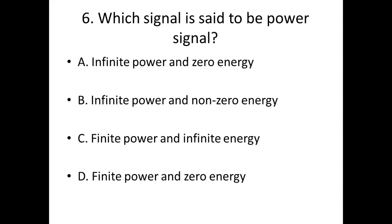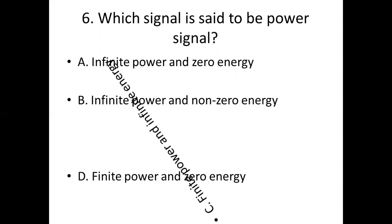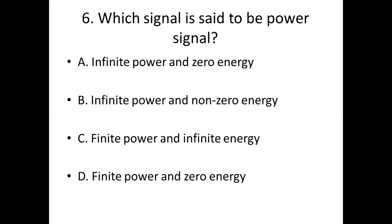Question 6: Which signal is said to be a power signal? Option A: infinite power and zero energy. Option B: infinite power and non-zero energy. Option C: finite power and infinite energy. Option D: finite power and zero energy. Answer: Option C — finite power and infinite energy.